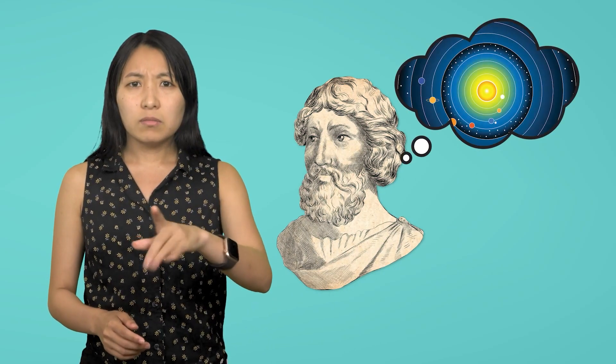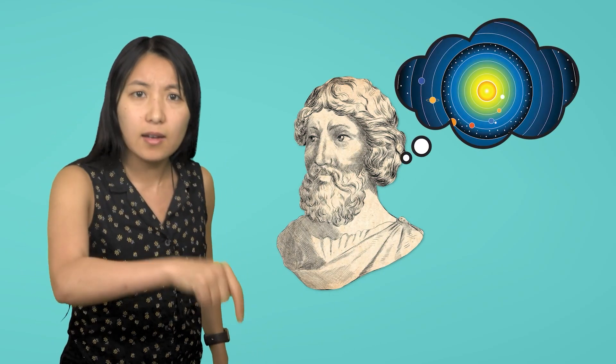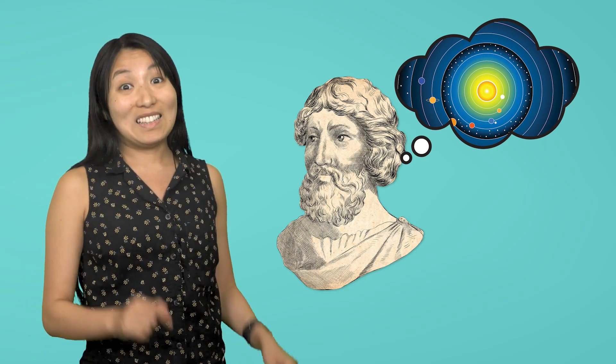In answer to this, a Greek mathematician named Aristarchus said, everybody, I think it's the Sun at the center, not Earth. But that idea sounded so wild that everyone ignored him for a few hundred years.